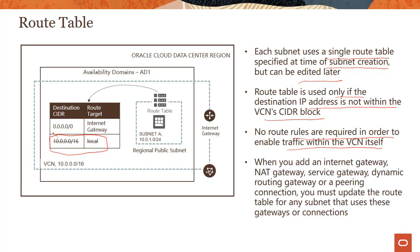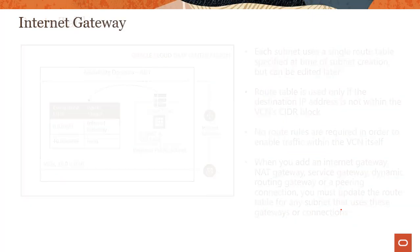When you add a gateway — whether it's an internet gateway, NAT gateway, or different kinds of gateways — you have to update the route table for the subnets that use these gateways. Otherwise, you can create a gateway but the packets will black hole; they have no way to reach the gateway. It seems logical, but that's how the route table works.